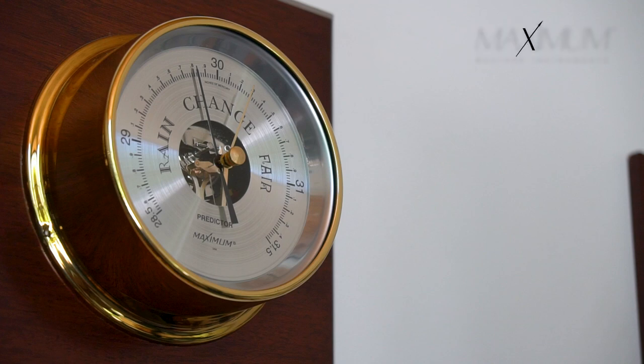Here we have our predictor barometer. The predictor barometer measures the barometric pressure in inches of mercury. Its range is from 28.5 inches of mercury to 31.5 inches of mercury.